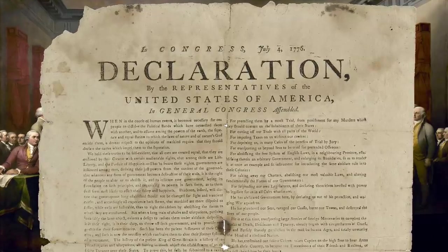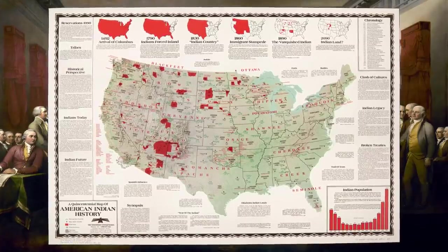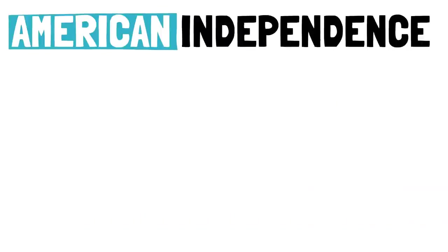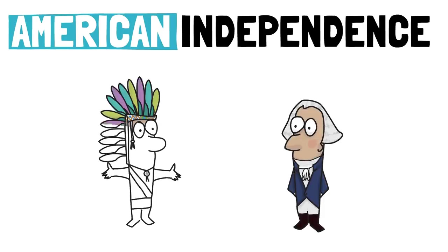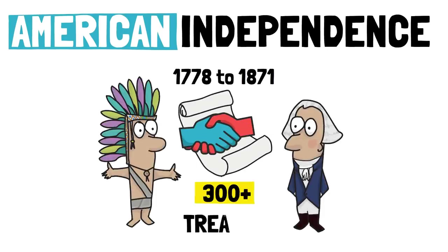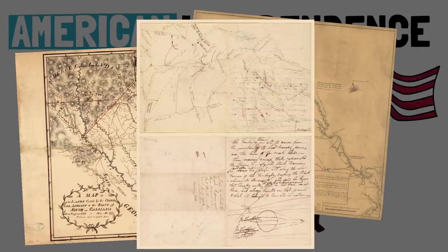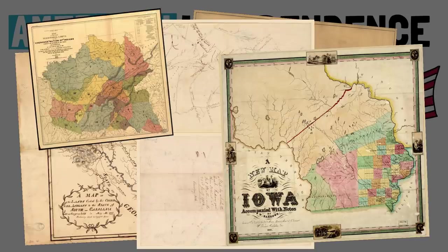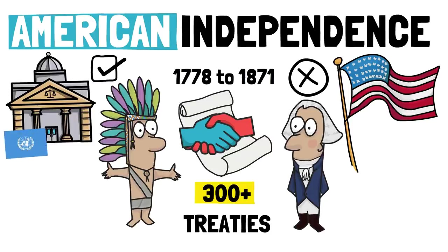The thing is, this land loss by the natives should not have happened in the dimension that it did — and not just morally, but legally. After American independence, from 1778 to 1871, the United States government entered into more than 300 treaties with the Native American tribes. Since then, all of these treaties have been partially or entirely broken by the US government, a fight that the natives have taken to court and even to the United Nations, and sometimes have won.